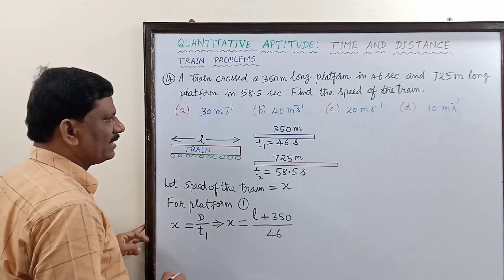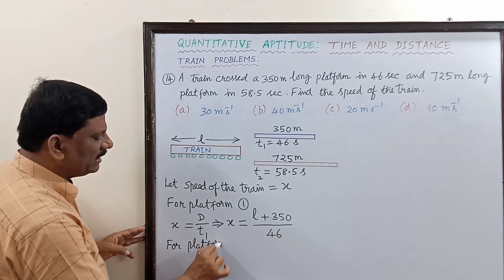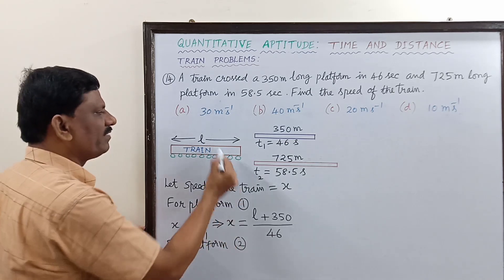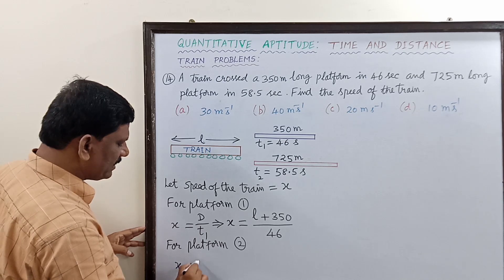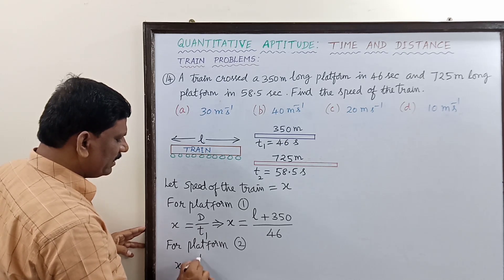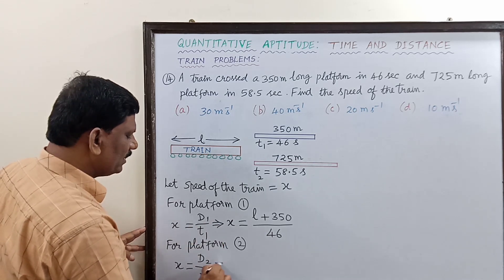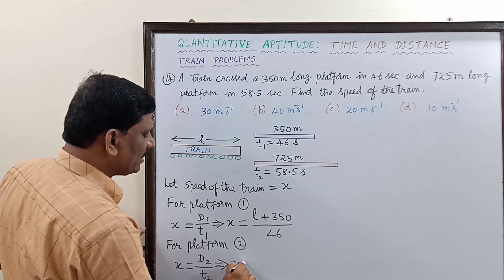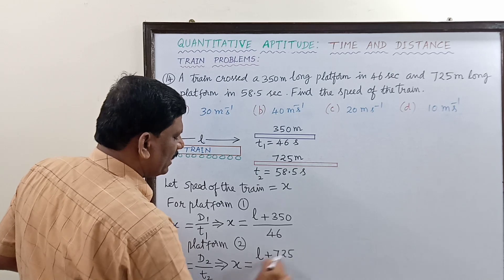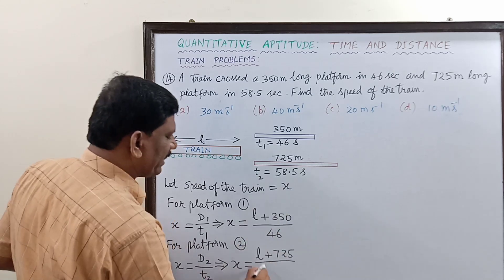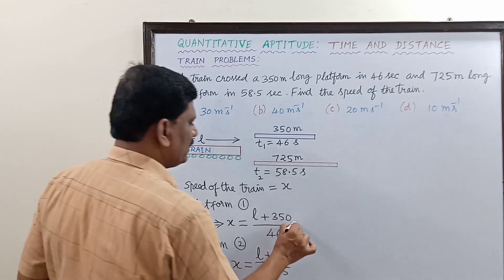For platform two, the distance traveled is L plus 725 and the time taken is 58.5 seconds. Since the speed is the same, X also equals L plus 725 divided by 58.5 seconds. This gives us our second equation.